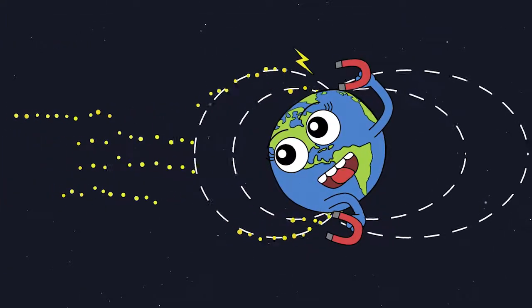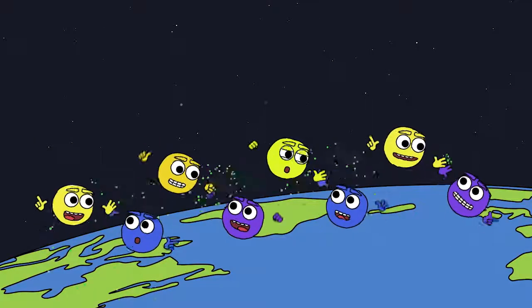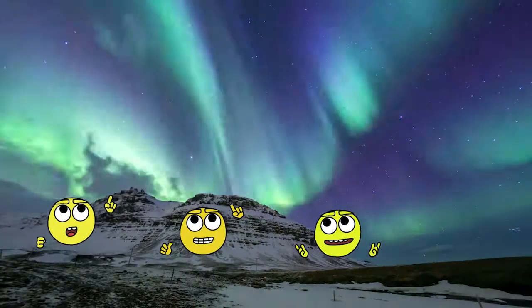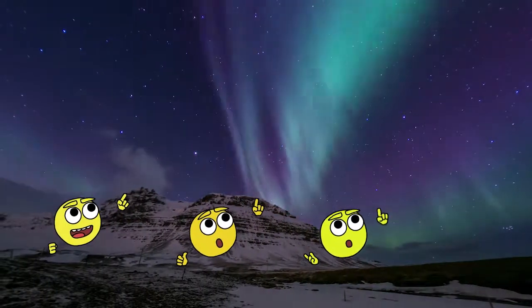And just when Earth thinks she's got them, they're pulled up north to party with oxygen and nitrogen. And what you get are the Northern Lights, a night sky full of beautiful greens and blues.